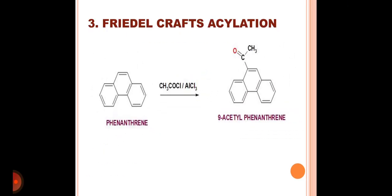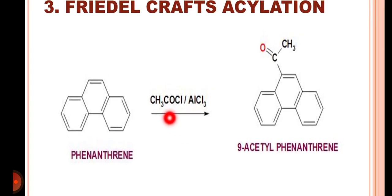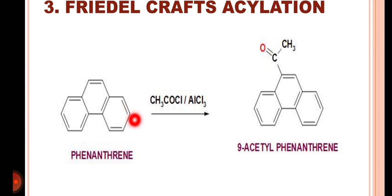The next reaction is the Friedel-Crafts acylation reaction. Here phenanthrene reacts with acetyl chloride, that is CH₃COCl, in the presence of aluminium chloride. The acetyl group, which is obtained by the reaction of acetyl chloride with AlCl₃, being electrophilic in nature attacks on the 9th position of the phenanthrene to bring about an electrophilic substitution reaction.